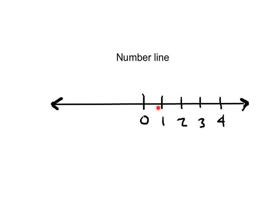From 0 to 1 is 1 unit away, then 2 units away from 0, then 3 units. Now when we go in the left direction, if we only go 1 unit away, we're getting into our negatives. That would be negative 1. Then it goes negative 2, negative 3, negative 4, and so forth.